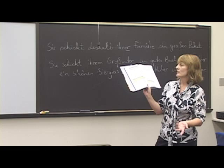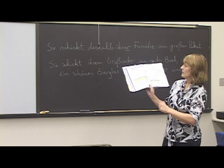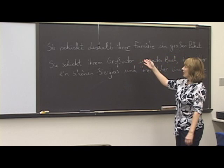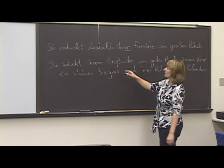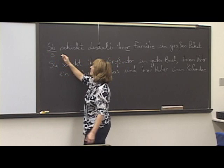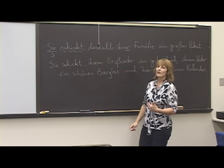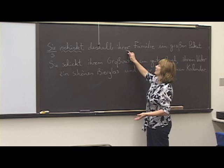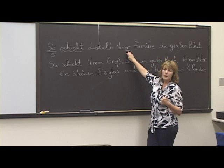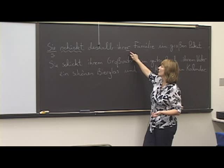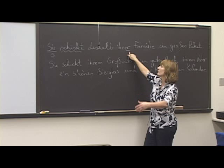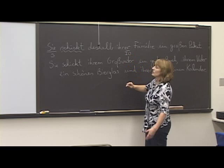The only object here is what she's celebrating: Weihnachten — Christmas. That's the direct object. Next sentence: Sie schickt deshalb ihrer Familie ein großes Paket. Sie is the subject, nominative. Schicken is to send — that's our verb. Who is she sending it to? Ihrer Familie — to her family. Family is feminine — die Familie — so in dative it ends in -r: ihrer Familie. That's our indirect object, dative.